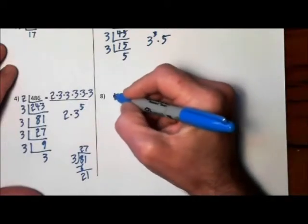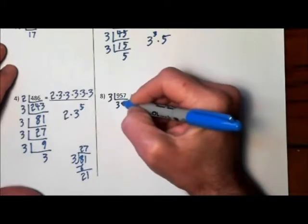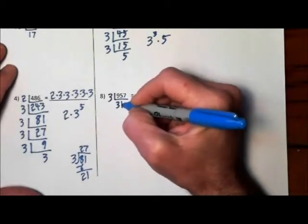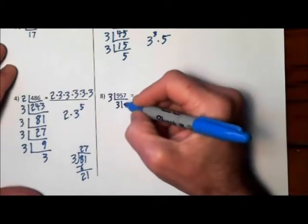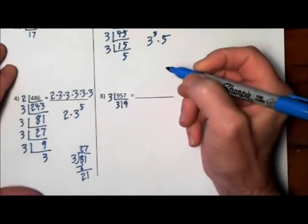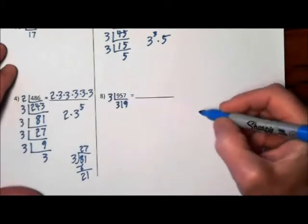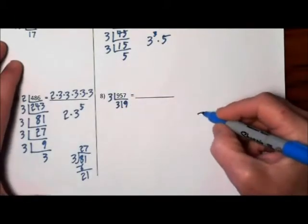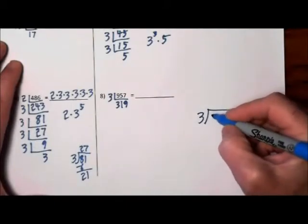3 into 9 goes 3 times. 3 into 5 goes once with 2 left over, so 3 into 27 is 9. And again, if you're not able to follow that, just crank it out real quick on the side. Just because I'm not doing long division doesn't mean you can't.